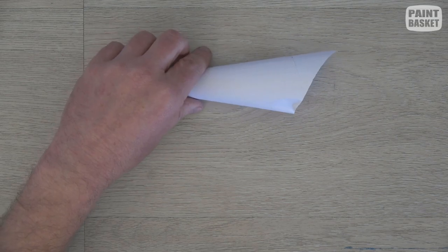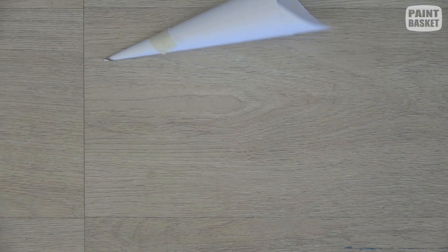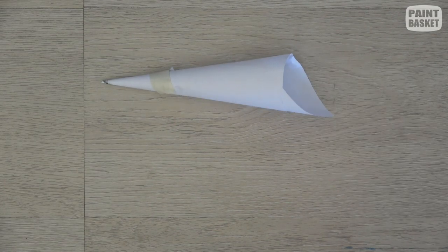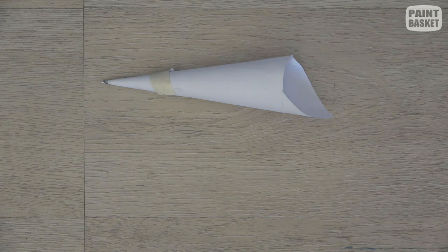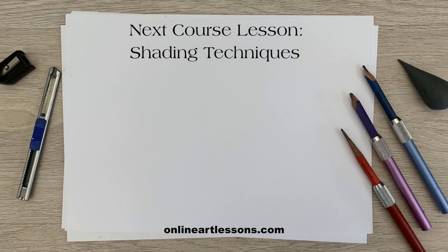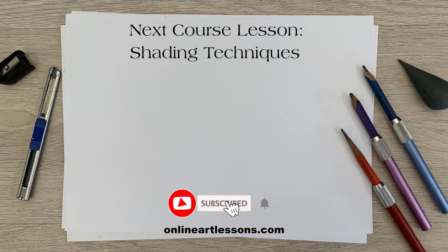So there you go. That's how you make yourself a blending stump with the paper you've got on hand. So I hope you enjoyed this lesson. In the next lesson, I'm going to show you how to do shadings using pencil. So I'll see you then.